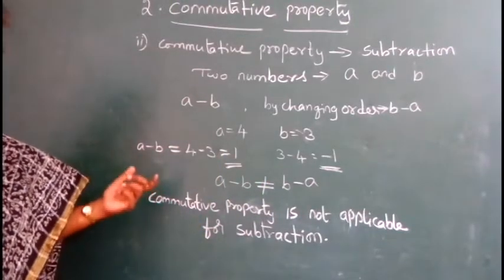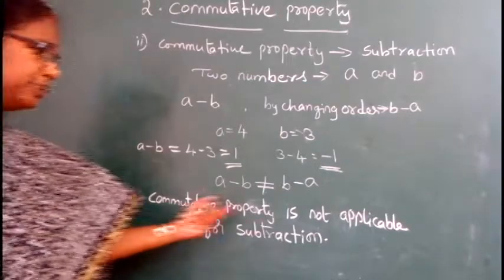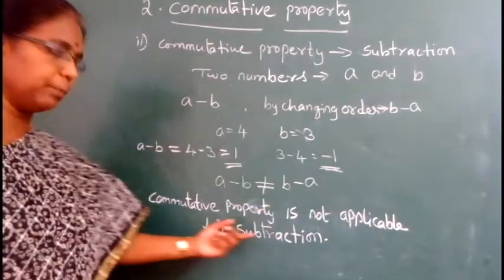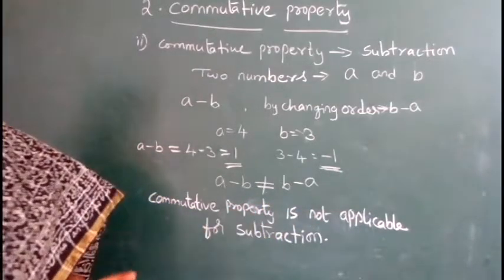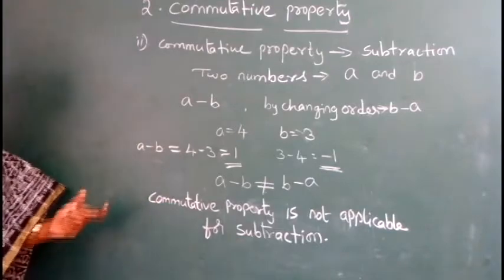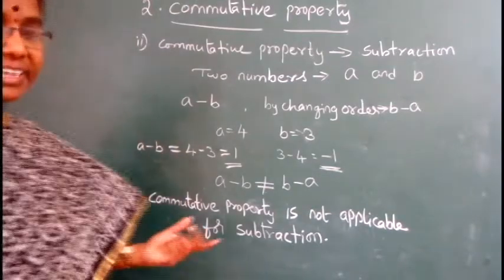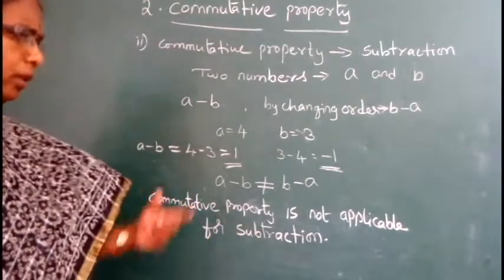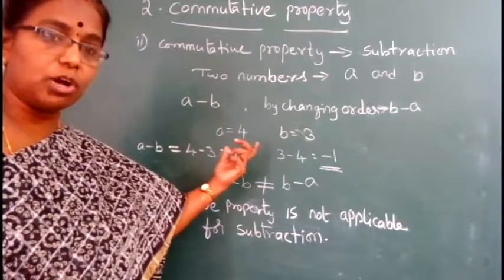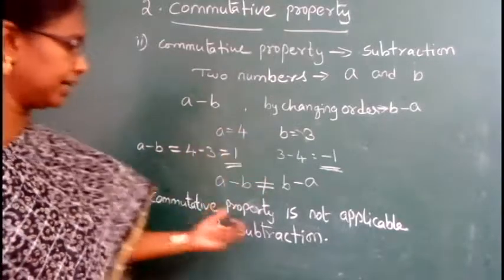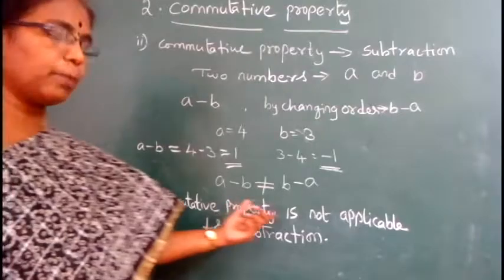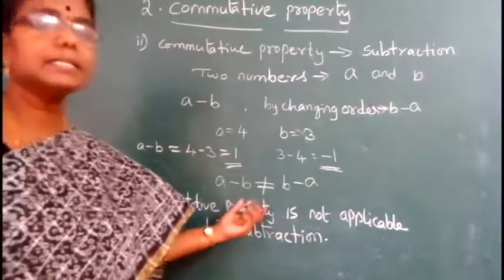From this, we can say that commutative property is not applicable for subtraction. Means, when you subtract two numbers, by changing their order, their result will not be equal. So, commutative property is not applicable for subtraction.